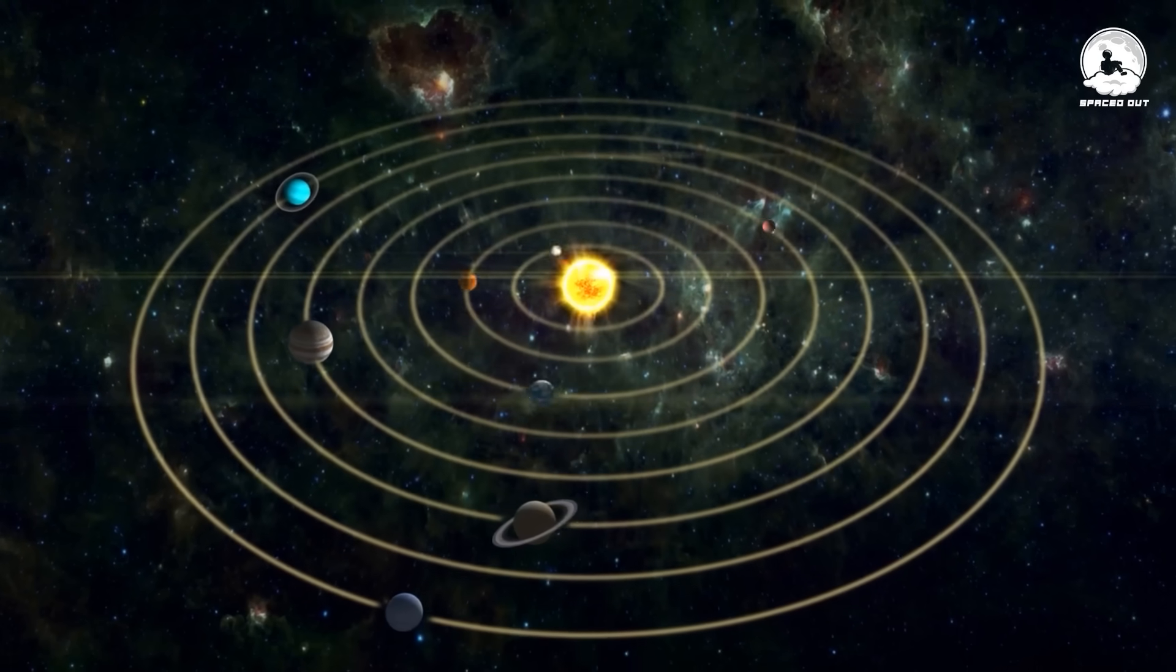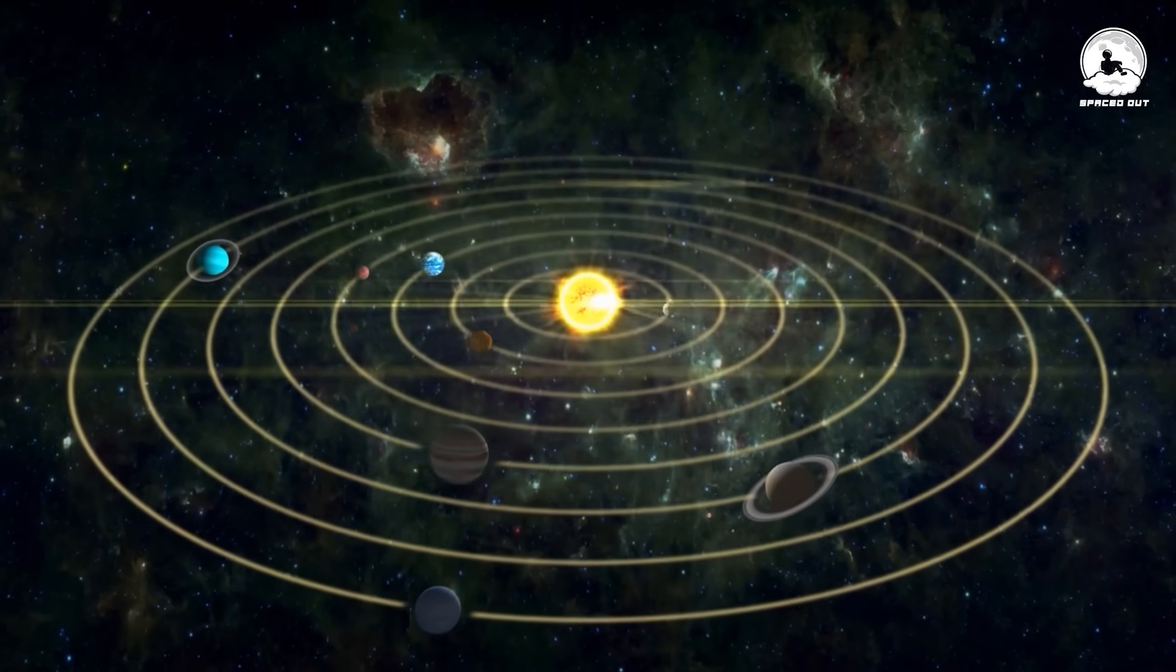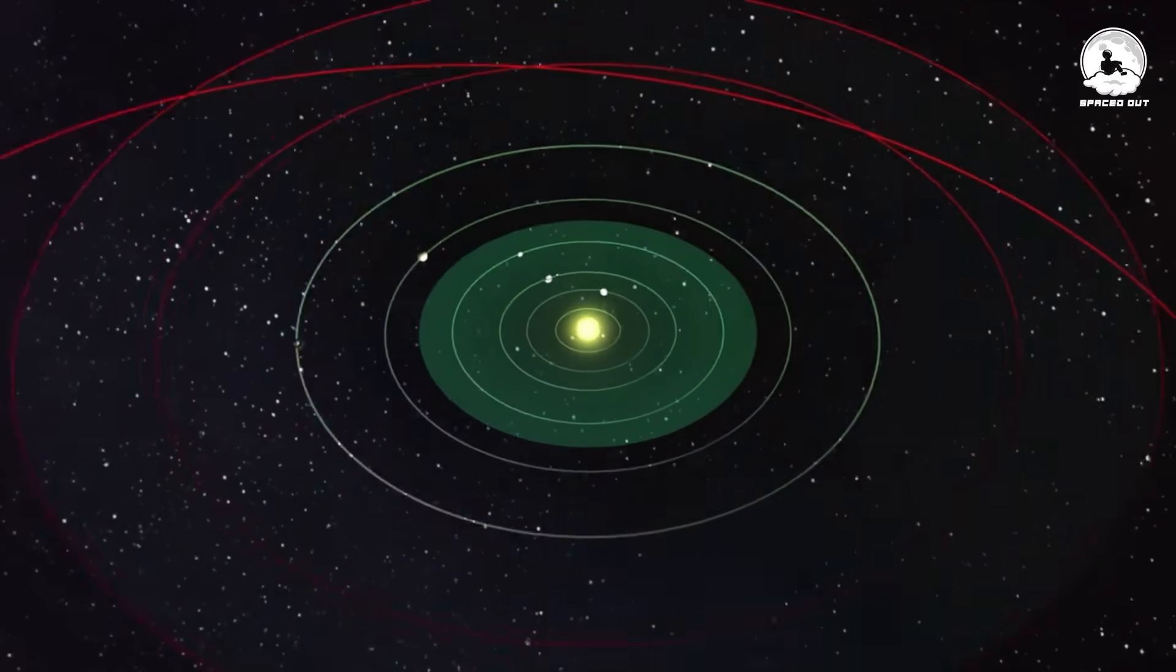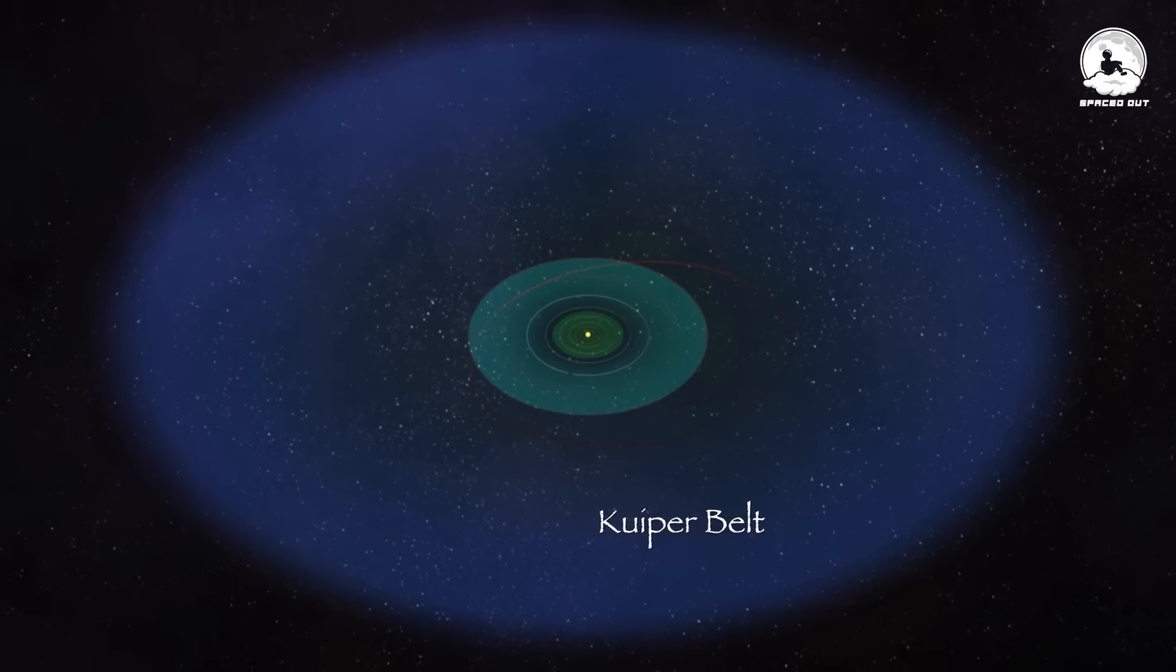Beyond Neptune, the eighth planet of the solar system and far into the outer edges of our space, lies a cold, donut-shaped region of space known as the Kuiper Belt.